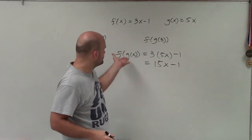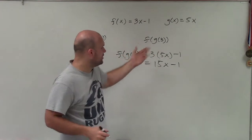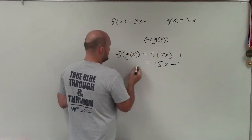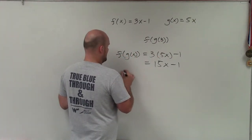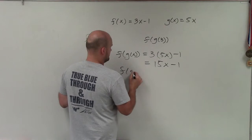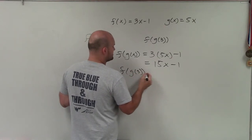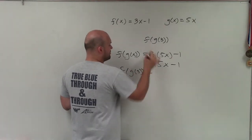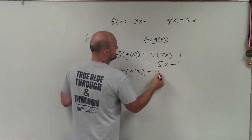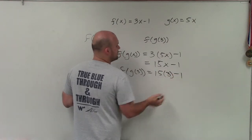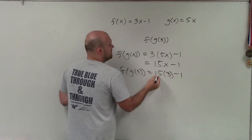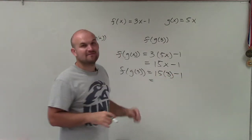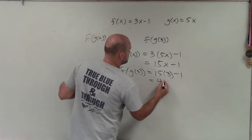Now I need to evaluate that for 3. After I've composed it, I just plug 3 in for my x. So it's 15 times 3 minus 1. 15 times 3 is 45, minus 1 is 44.